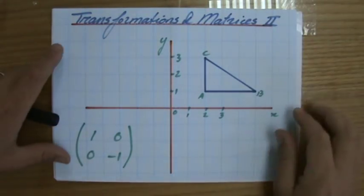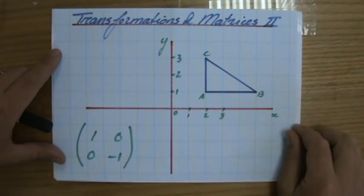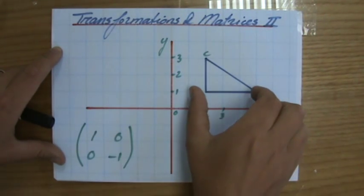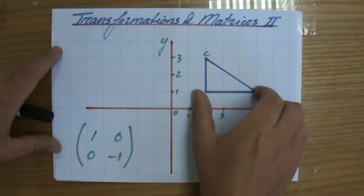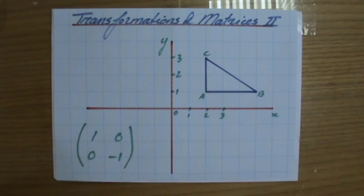Hopefully you've seen my first video about transformations and matrices because I'm going to go a little bit quicker now. So we have to transform this object under the matrix, or using the matrix 1, 0, 0, minus 1. And as I told you before, you always have to do this for a 2 by 2 matrix, never a different matrix with a different order.